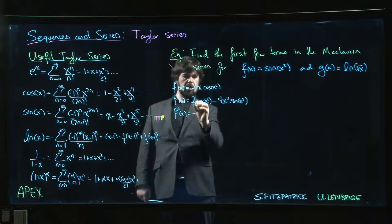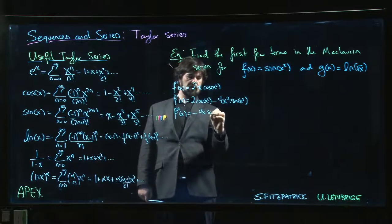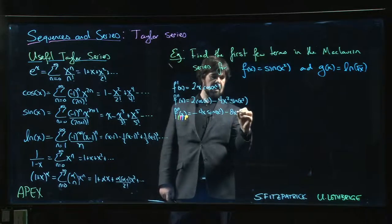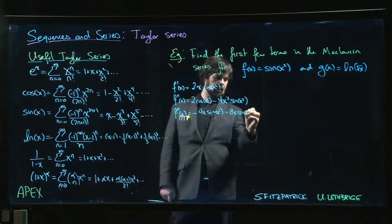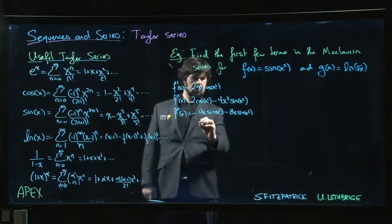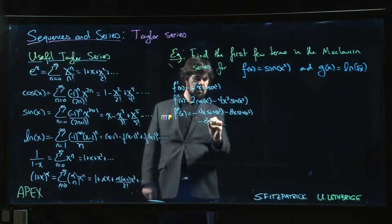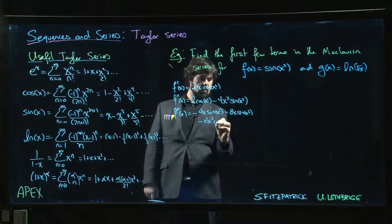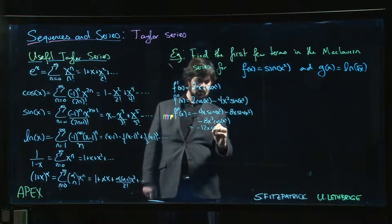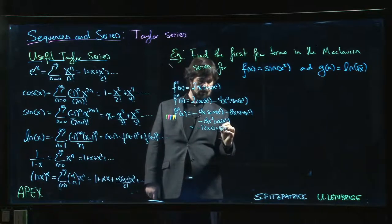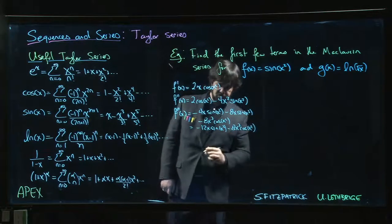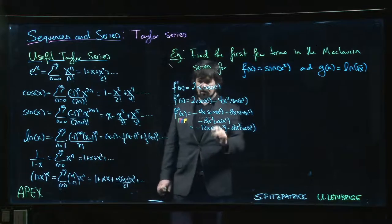Here we're going to have minus 4x sin(x²) minus 8x cubed cos(x²). So now we've got minus 12x sin(x²) minus 8x³ cos(x²), and that's equal to 0 at 0.